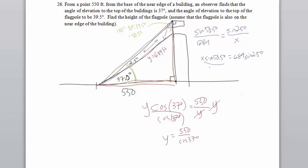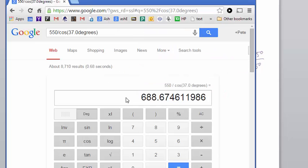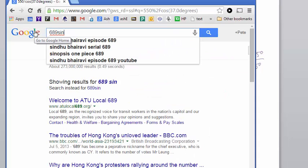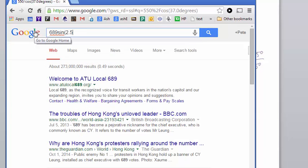And then of course I would divide by the sine of 50.5 degrees, and that will allow me to solve for x. So I've got to plug that into my calculator, 689 times the sine of 2.5 degrees, and that's going to be divided by the sine of 50.5 degrees.